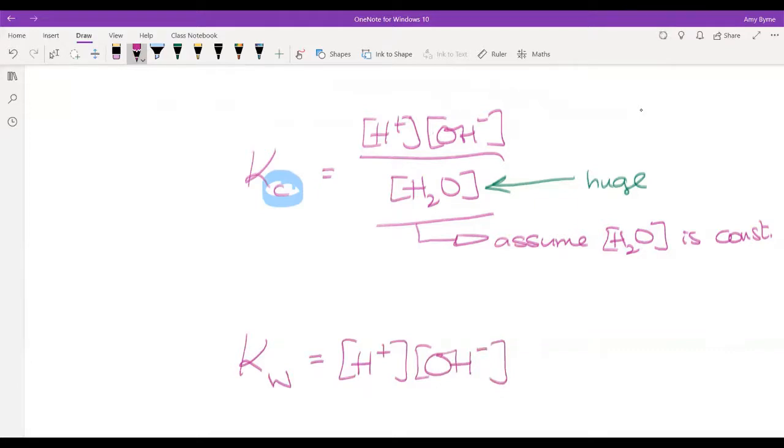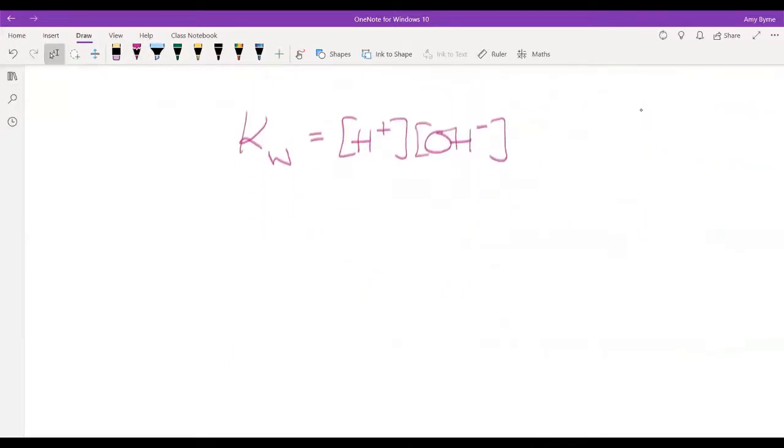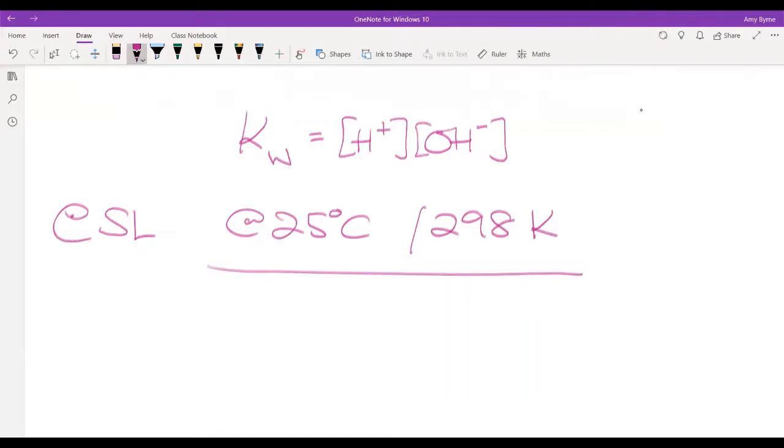What that means we can do is instead of doing a KC, we can do something called a KW, which is just concentration of H plus concentration of OH minus. There is a table in the data book, section 23 that shows the value of KW at different temperatures. At SL, we only do at 25 degrees C, which is 298 Kelvin. At those temperatures, because remember KC is temperature dependent, therefore KW will be temperature dependent. At 25 degrees C, the value of KW, because it's a constant, is 10 to the minus 14. Technically in the data book, it is given as 1.00 by 10 to the negative 14.